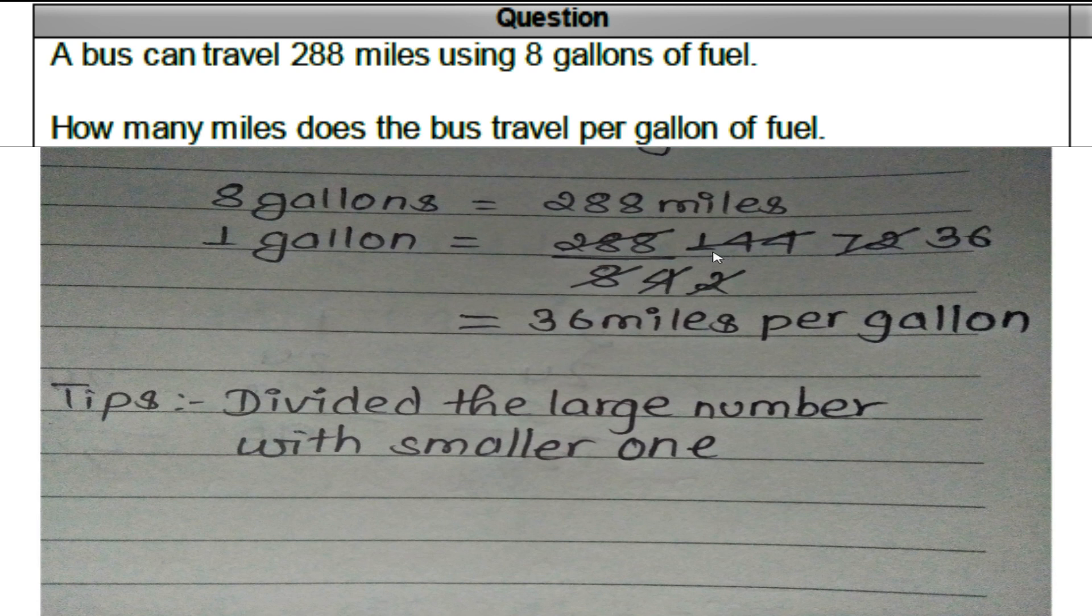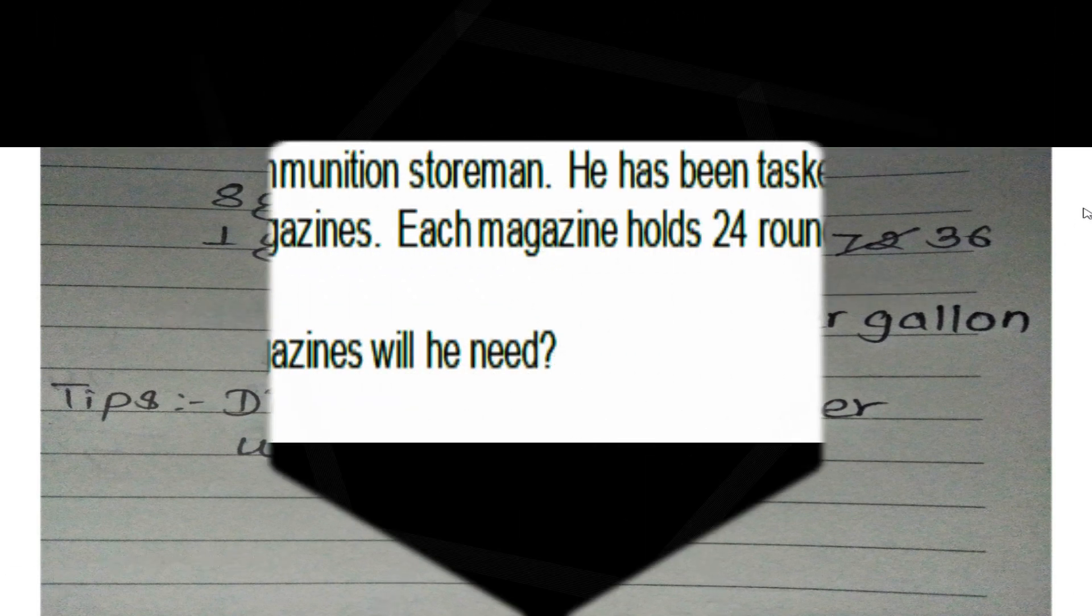288 divided by 8 equals 36 miles per gallon. The answer is 36 miles per gallon. Here's a tip: divide the larger number with the smaller one. If you understand this question, let's move to the next question.